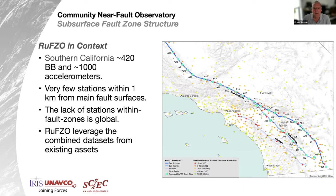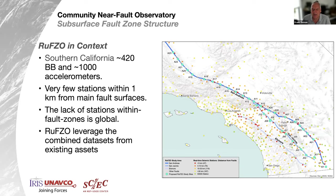This fault zone observatory is not being built in a vacuum. There are already over 400 broadband seismometers and over 1,000 accelerometers in Southern California, plus similar numbers of geodetic sensors. However, we have very few stations within one kilometer of the main fault traces, and that's why we're focusing the RUFZO design characteristics so far. The lack of stations within fault zones is actually a global phenomenon, and we would like this template to be applicable in other places. It's very important that RUFZO will leverage existing datasets and complement them to build a stronger observing system for better understanding of fault structure, earthquake rupture, and faulting properties.